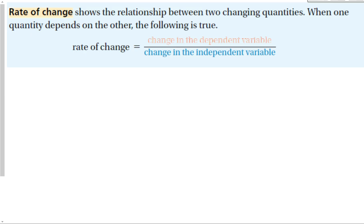Our definition for rate of change is that it shows the relationship between two changing quantities. When one quantity depends on the other, the rate of change is equal to the change in the dependent variable over the change in the independent variable. In order to use the rate of change, we need to know which variable is which — which one is dependent, which one is independent, which one is x, which one is y.